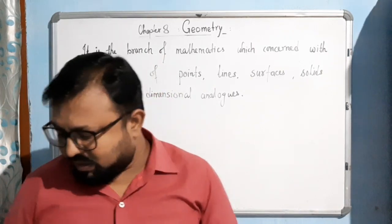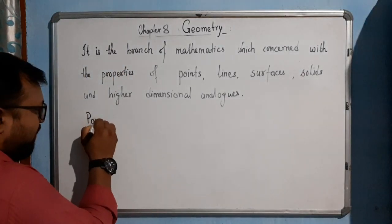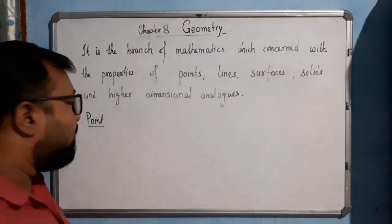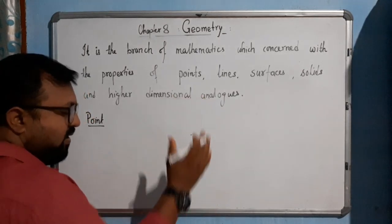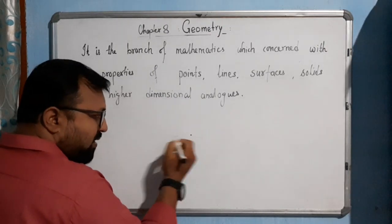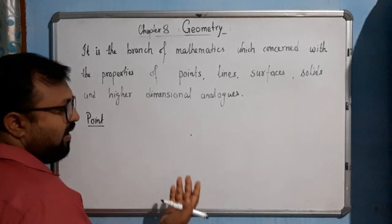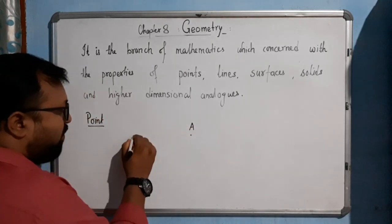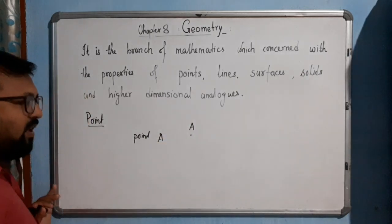In this first chapter, we will talk about the point. What is a point? A point is a location in a surface, any plane, or any place. It is just a dot. It doesn't have any length, breadth, or height. It can be represented by a capital letter — suppose A. So we can say that is point A.